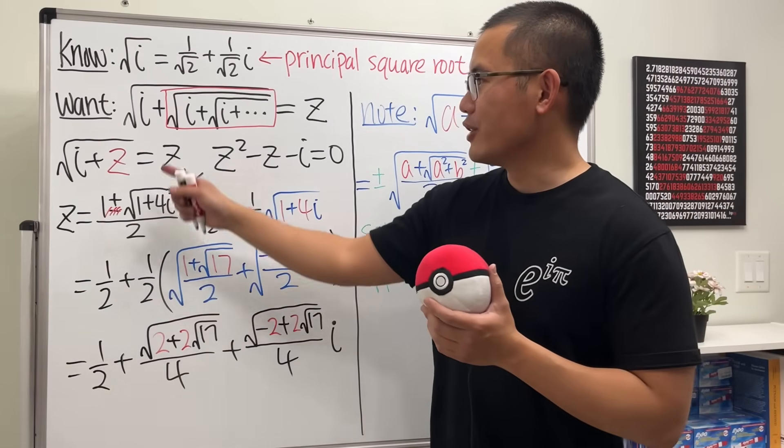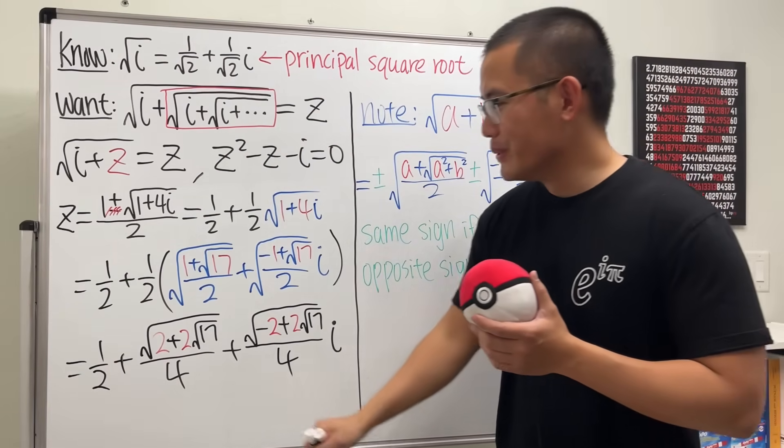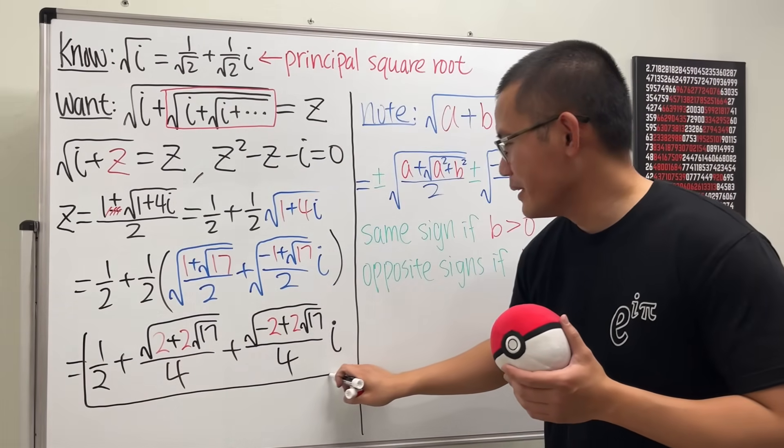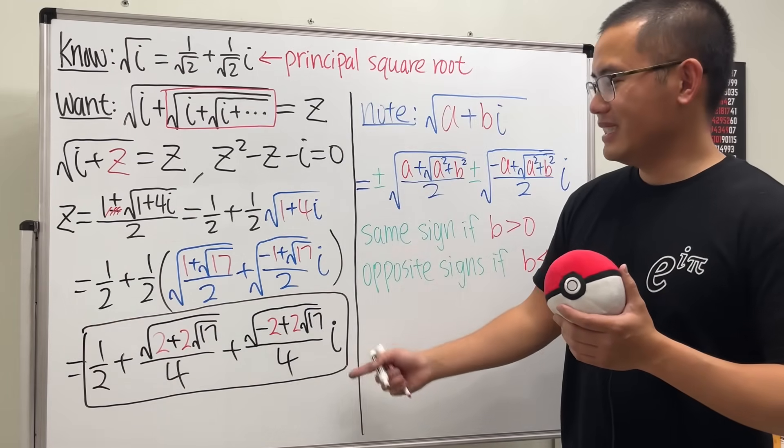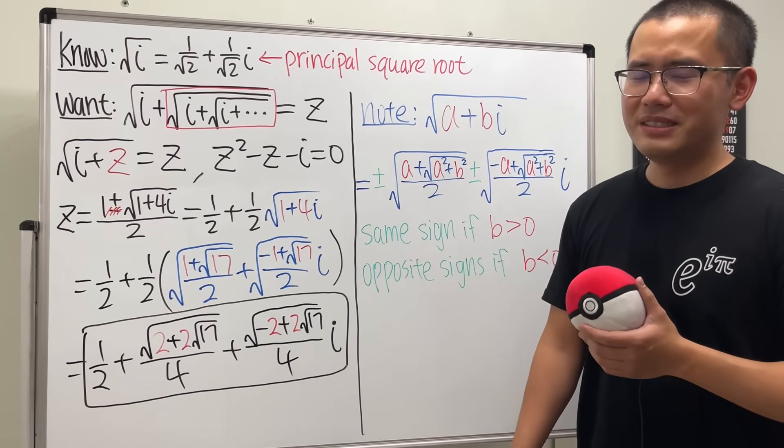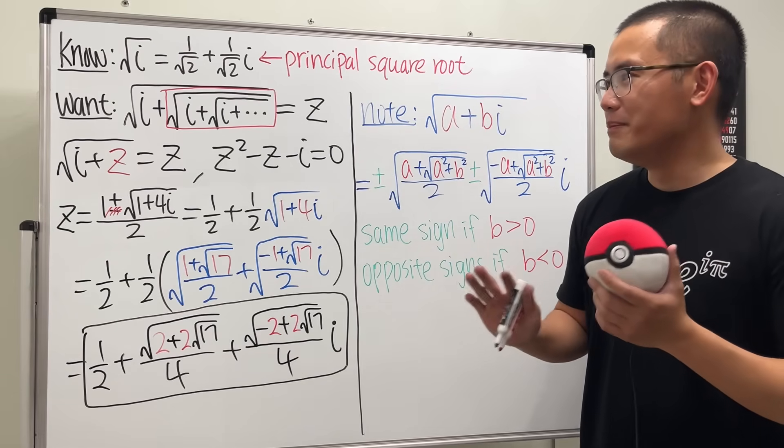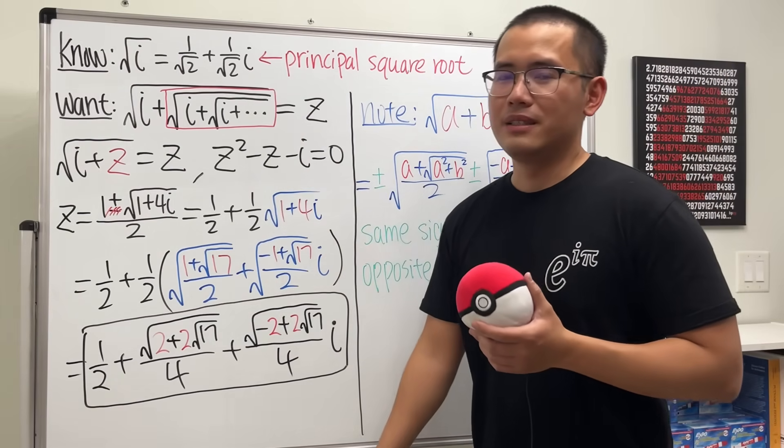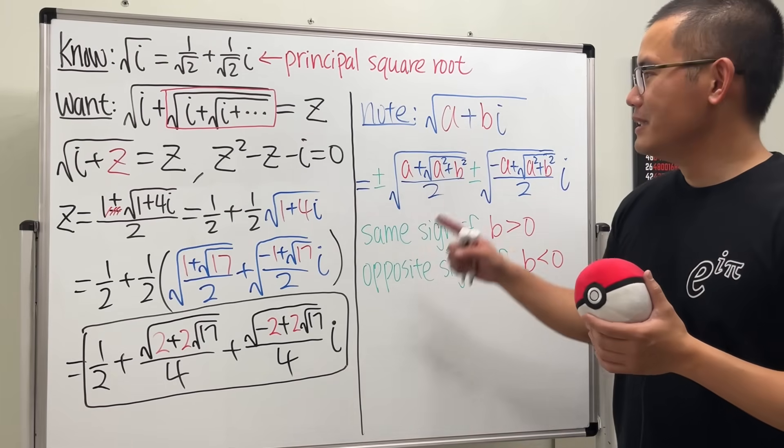So, ladies and gentlemen, square root of i plus square root of i plus square root of i and so on. It's equal to this right here. I'm not going to say it out loud, but you can see. I think it's really, really cool. But of course, this is just one answer out of infinitely many answers of this, technically speaking. And I know I owe you guys this formula. So, of course.